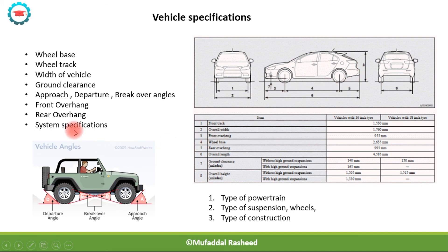There are also generic system specifications like type of powertrain, type of suspension, wheels, type of construction, and more detail about the different types of features available for the vehicle. All of these together form the vehicle specifications.